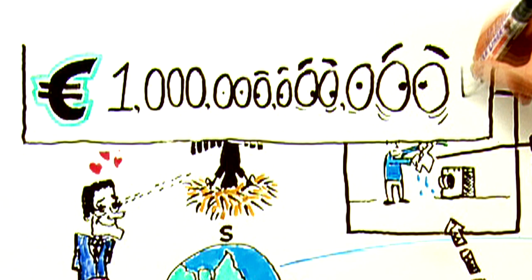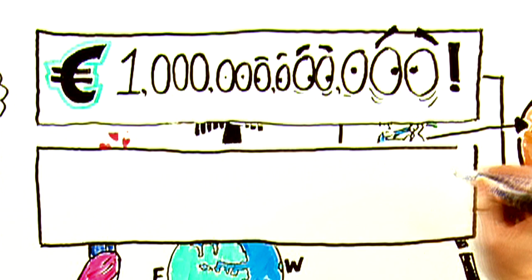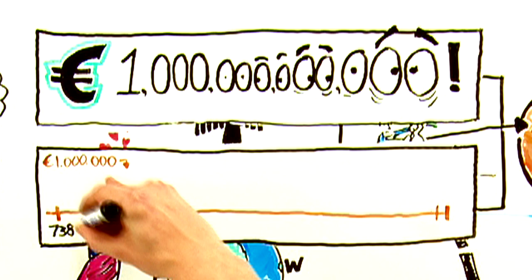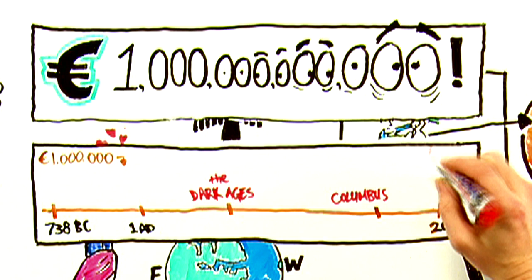1 trillion is 1 followed by 12 zeros. That is a huge amount of money. If you were to spend 1 million euros a day, it would take you 2,740 years to spend 1 trillion euros.